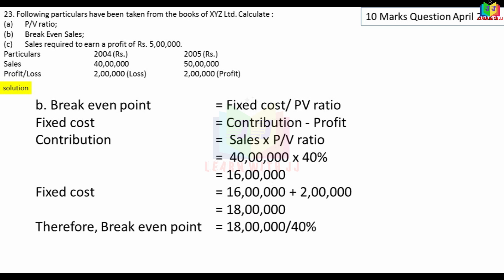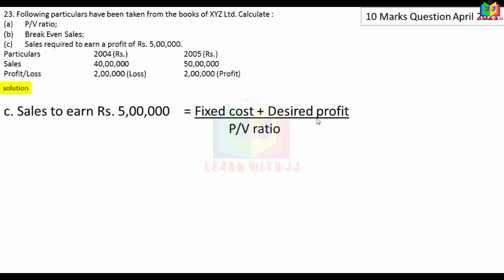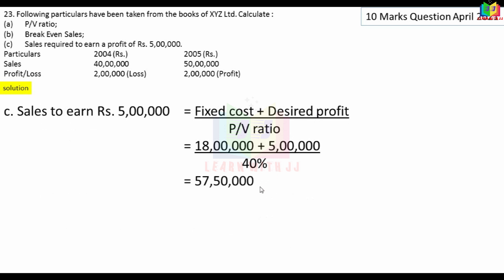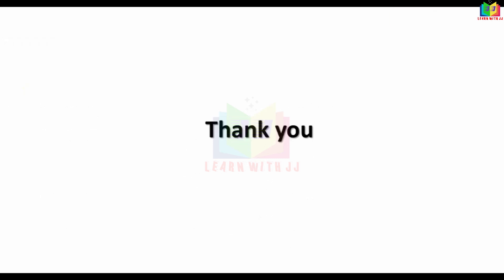Sales required to earn a desired profit of Rs.5 lakh: formula = (fixed cost + desired profit) ÷ PV ratio = (Rs.18 lakh + Rs.5 lakh) ÷ 40% = Rs.57,50,000. That concludes this problem. The next question is from the book — refer to the video for the question source. Thank you for your patience.